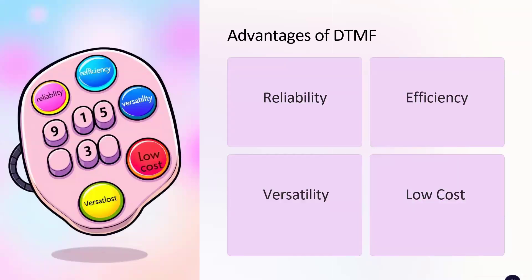Some advantages of DTMF include reliability, efficiency, versatility, and low cost. DTMF signals are highly reliable with low error rates and can be transmitted accurately over various telephone networks. DTMF also allows for faster and more efficient interaction with phone systems compared to the older pulse dialing methods, enabling quick access to features and services.